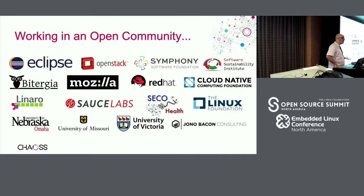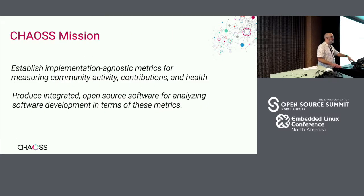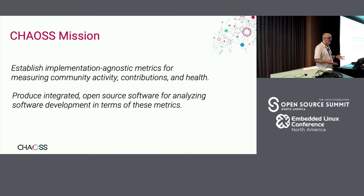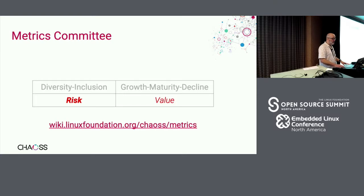There are a lot of upstream contributors that participate in CHAOSS because they want to understand the health and sustainability of the software projects that they engage in. Risk comes into play from a number of different important perspectives. CHAOSS has a mission: to establish implementation-agnostic metrics for measuring things that connect to open source health and sustainability, and to produce integrated open source software that analyzes those things. Today I'm going to talk about the risk metrics themselves and some software we use to measure them.